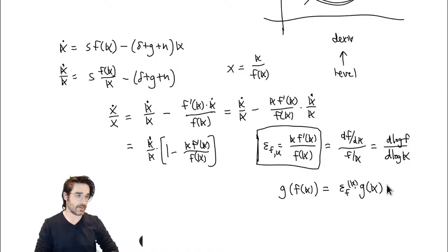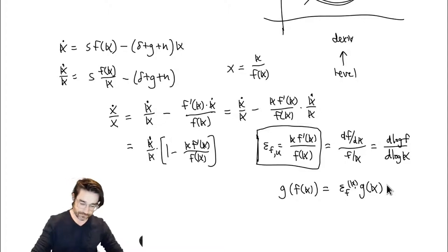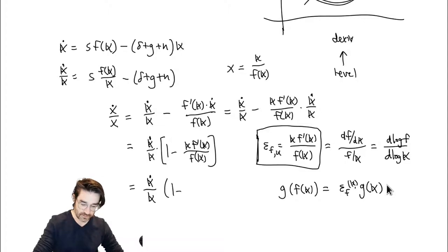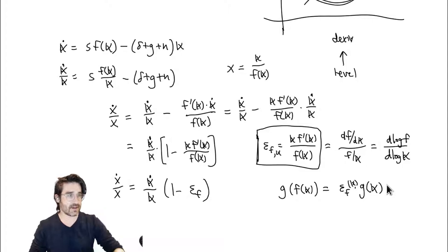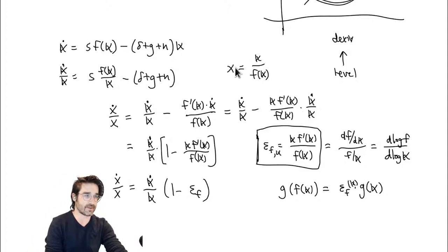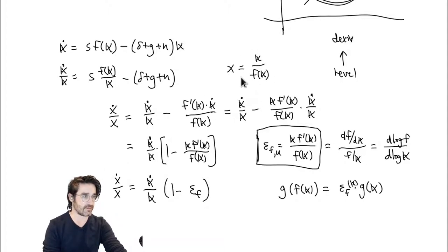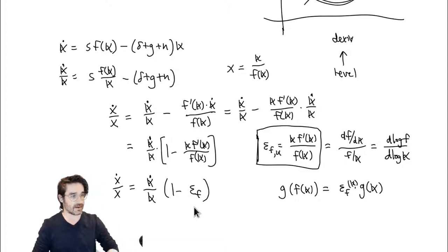The elasticity is useful because it shows up when working with growth rates, so develop good intuition for what it means. Getting back to our question: if you substitute in, you get the growth rate of K times (1 - elasticity of F), and that's X-dot over X. So we found the growth rate of X — it's the growth rate of K minus the growth rate of F, where the growth rate of F is its elasticity times the growth rate of K.